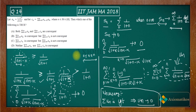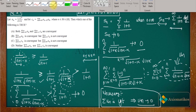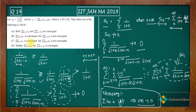So we cannot say it's divergent definitively from the necessary condition alone, but we can say it is not convergent. Therefore, Σ aₙ is convergent but Σ cₙ is not convergent, which means option B is correct and all other options are false. Thank you.